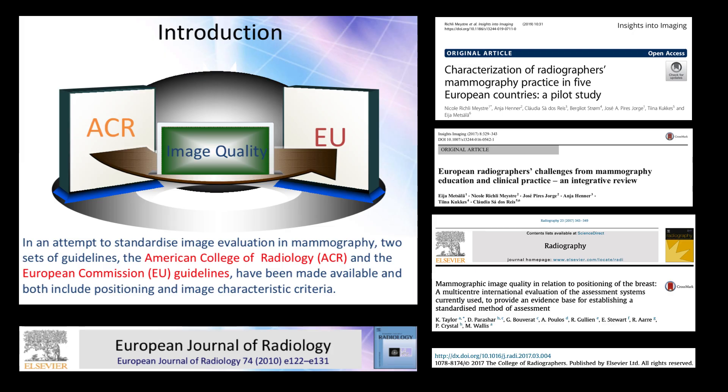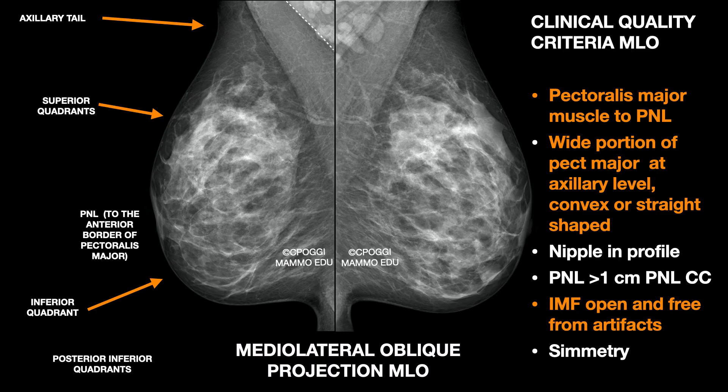There are two principal clinical quality assessment systems in mammography, which depend highly on radiographers' performance. They are qualitative systems, scarcely reproducible, despite the many attempts to standardise them all over the world. These are the clinical quality criteria for MLO projection — some are specific, some are in common with CC — and we had already been through them in the third video. Look now at the ones outlined in orange.